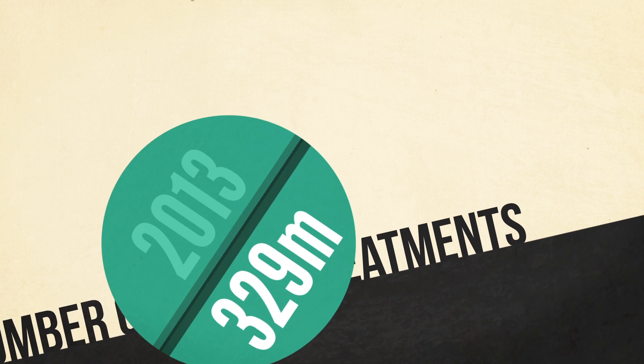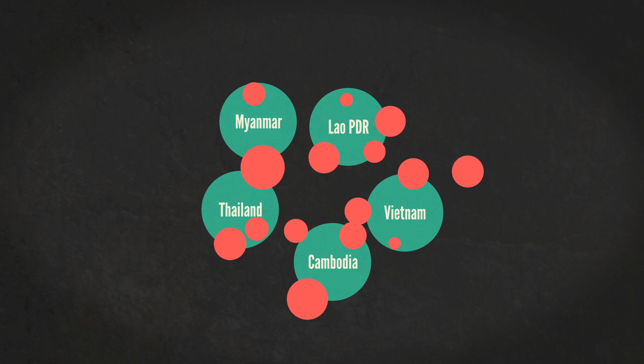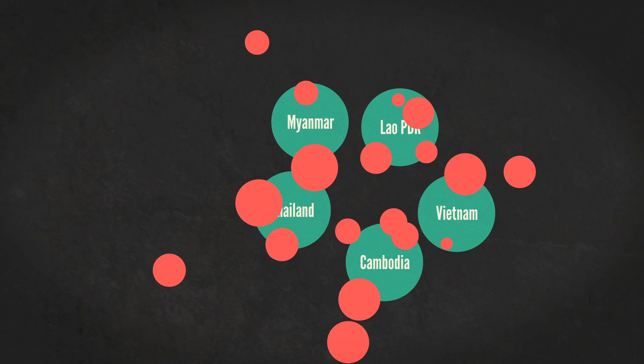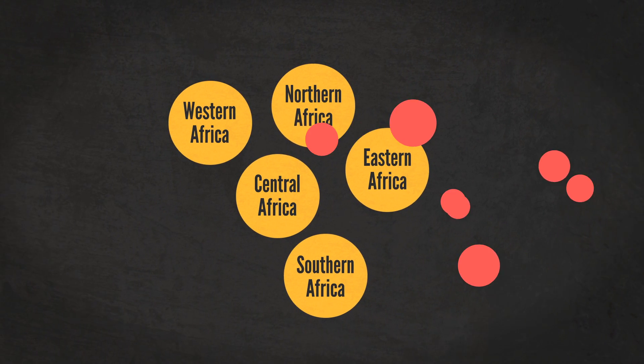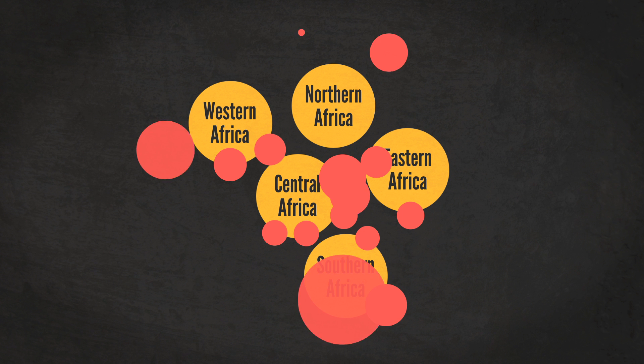But the spread of drug-resistant malaria in the Greater Mekong subregion is threatening this success. If drug-resistant malaria expands to Africa, where malaria rates are the highest, we could see a massive resurgence in death.